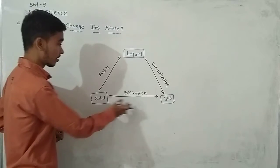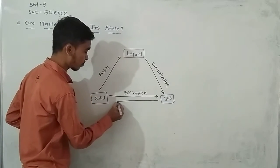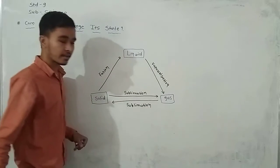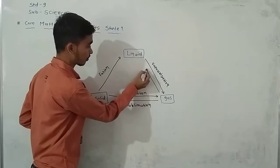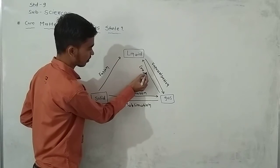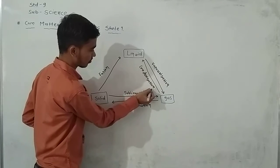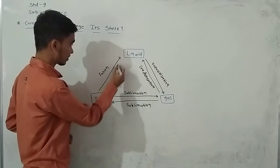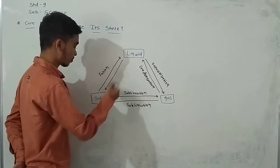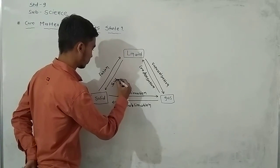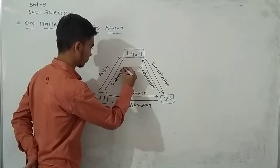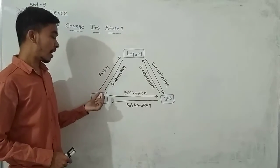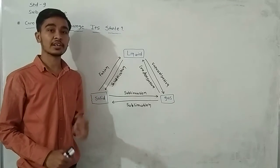Vice versa, gaseous to solid state also takes place, and we have defined it as sublimation. Gaseous to liquid state also takes place, and we have defined it as condensation. Liquid to solid state also converts, and we have defined it as solidification. So students, by the effect of change in temperature and pressure, matter changes its state.